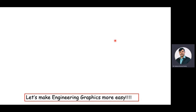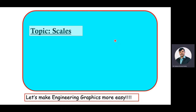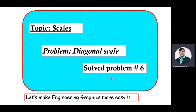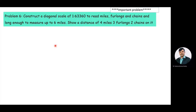In this video we are discussing a topic on scales. Under scales we are going to solve a problem on diagonal scales — this is the sixth solved problem under diagonal scale. The problem is: construct a diagonal scale of 1 is to 63,360 to read miles, furlongs and chains, long enough to measure up to six miles. Show a distance of four miles, three furlongs and two chains on it.